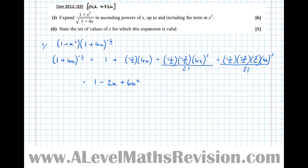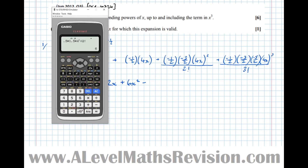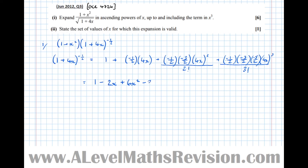Count the minus signs — there are 3 of them, making a minus. So: 0.5 × 1.5 × 2.5 × 4³ / 3! = 20, so minus 20x³. So (1 + 4x)^(−1/2) = 1 − 2x + 6x² − 20x³ + ... Now we must multiply that by (1 + x²).